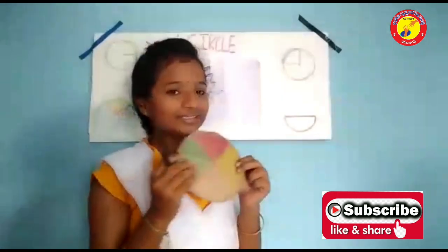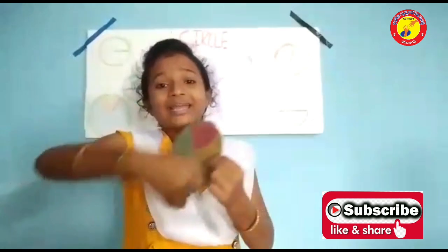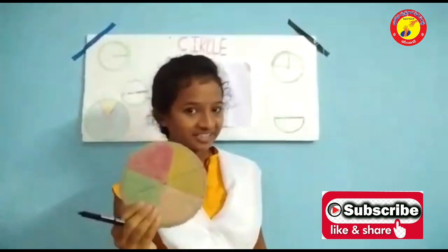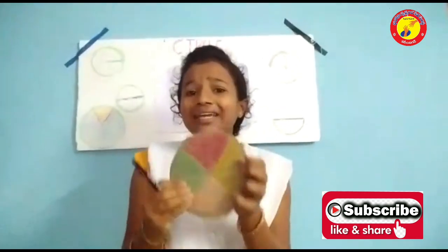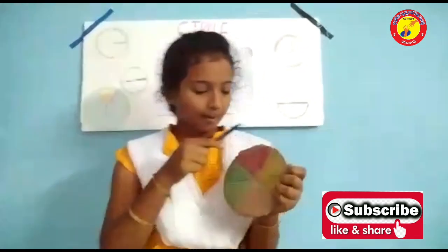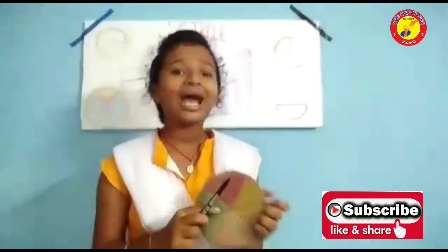The diameter of a circle is double the radius, meaning d equals 2r. The region inside the circle which is enclosed by the boundary is the circular region. A circle has three regions: interior, boundary, and exterior.